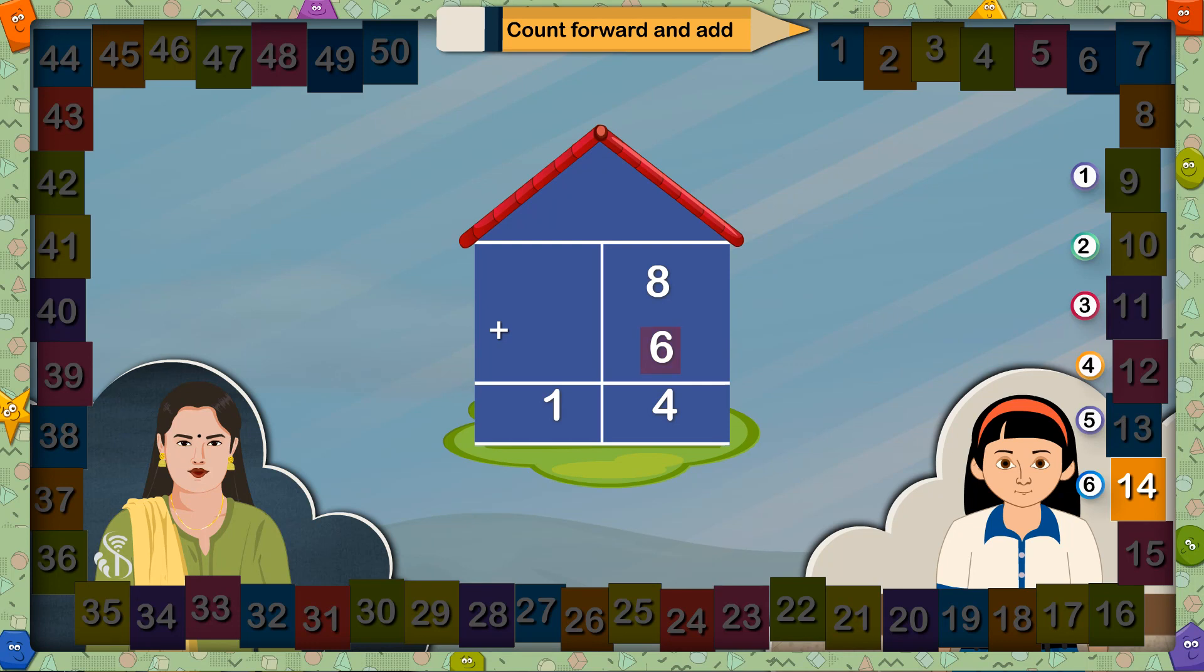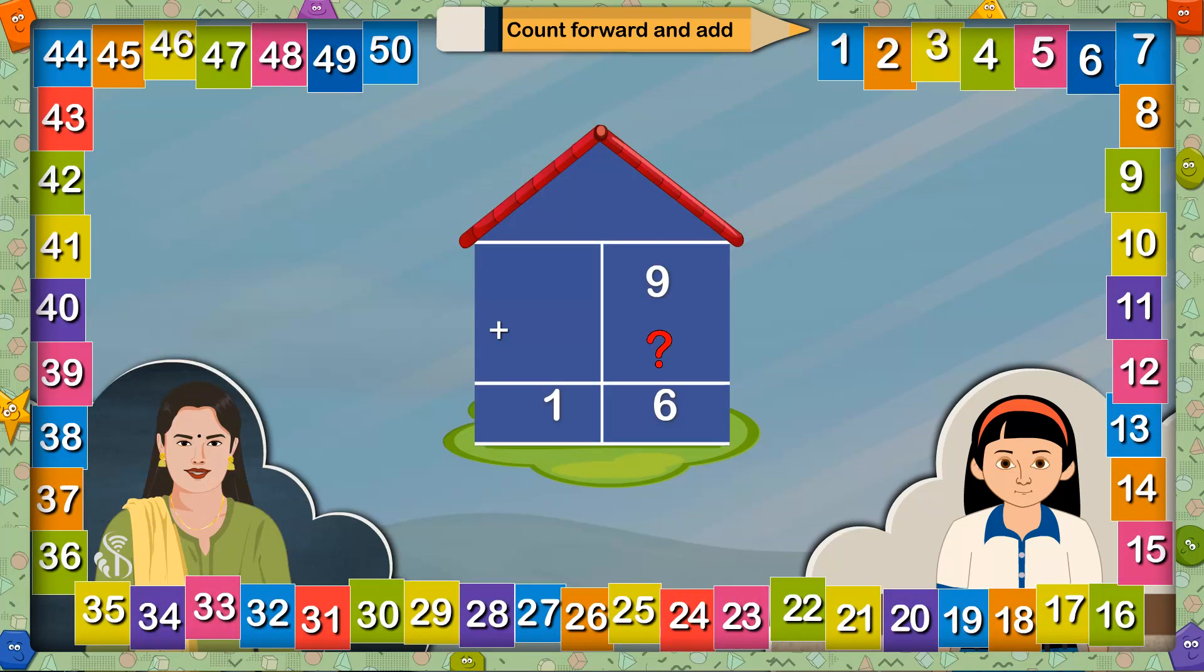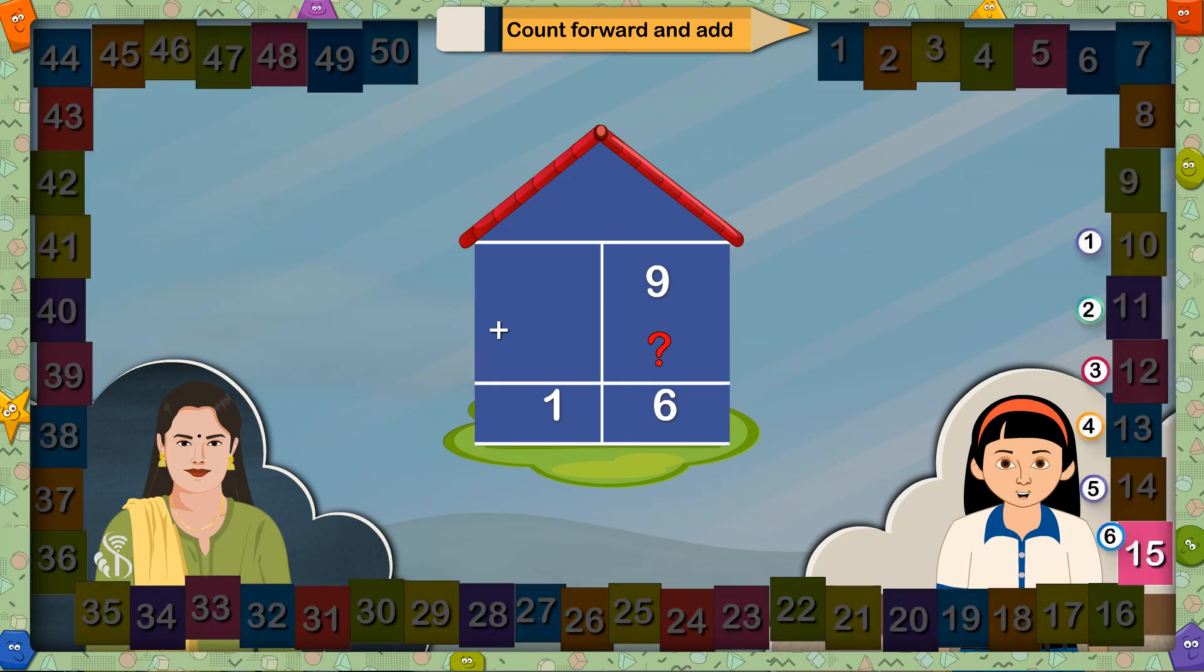What number should be added to 9 so the answer will be 16? Madam, from 9 I counted 7 places to reach 16, so the number must be 7. That's right.